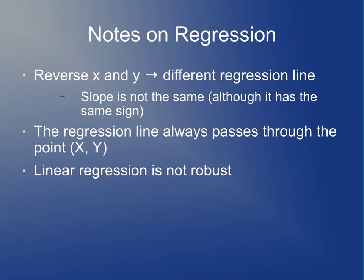A few other comments on regression: if you reverse x and y and refit the model, you'll get a different regression line with a different slope (though the same sign). The regression line always passes through the point (x̄, ȳ). Also, linear regression is not robust — if there are outliers in your data, they can cause major problems.